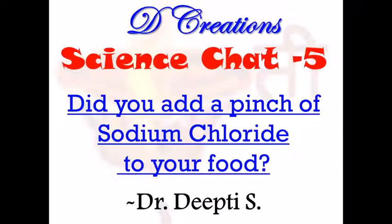Now, in a compound, two or more elements are present — like an inter-school competition where students from different schools wearing their respective school uniforms have come together. An element of sodium which has the symbol Na and an element called chlorine which has the symbol Cl come together and form a compound called NaCl, or sodium chloride.